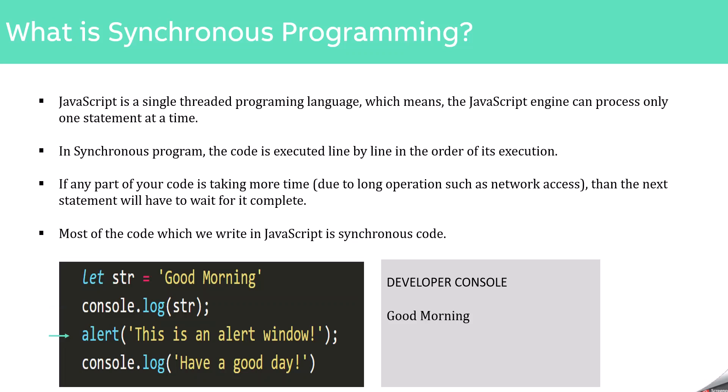In this statement, we are calling the alert function and passing some message to it. The alert function displays an alert window in the browser, and an alert window is a modal window, which means it makes the web page unresponsive. The execution of the alert function is complete only when this alert window disappears — that means when we click on the OK button. Until then, the execution of the alert function is still in progress, and because of this, the next console.log statement will have to wait. So here, the alert function is blocking the execution of the next statement.